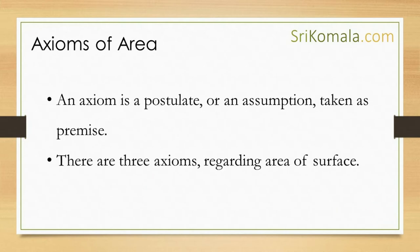First, before we prove the area of a square, we need to know the axioms of area. An axiom is a postulate or an assumption taken as premise. There are 3 axioms regarding the area of a surface or shape.